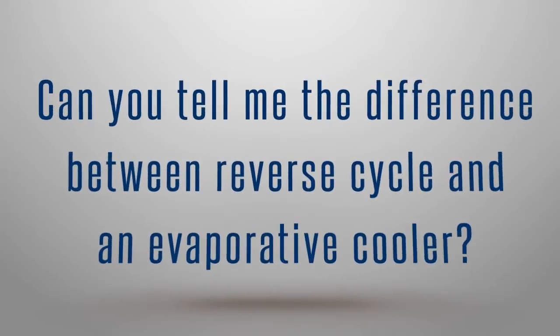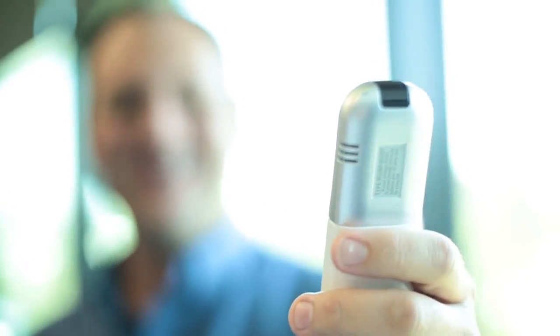Can you tell me the difference between a reverse cycle air conditioner and an evaporative cooler? Reverse cycle air conditioning has got a compressor outside and a fan coil inside. We're cooling or heating refrigerant and passing that up through copper pipes into a coil. That coil is either heated or cooled depending on what setting it's on. Then we're passing air taken from inside your house across this heating or cooling coil and back into the home.